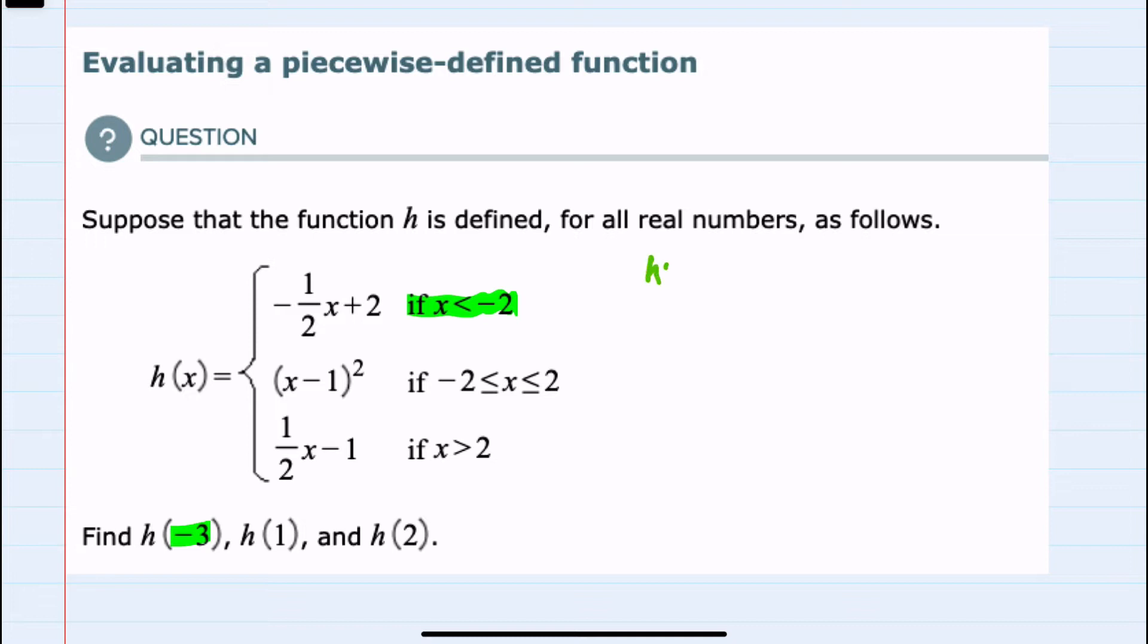So h of negative 3, using the top definition, we would replace x with negative 3. So negative one-half times negative 3 plus 2. Doing multiplication first, negative one-half times negative 3 would be a positive three-halves, plus 2.